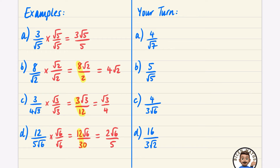Pause the video and try the four practice questions. For the first one, multiply by root seven over root seven — that gives four root seven over seven, and four over seven is already in its simplest form, so leave it there.